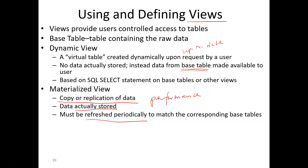Why do we create views? For security reasons, we only want users to see the data they are supposed to see. Also, views simplify query commands — sometimes we need to write a complicated query and it takes multiple steps to get the result. We can create a view with intermediate results so we don't have to go through five steps every time, maybe just two steps. If you update a dynamic view, in most cases the change will propagate to the base table, unless there is a restriction on updating the view.